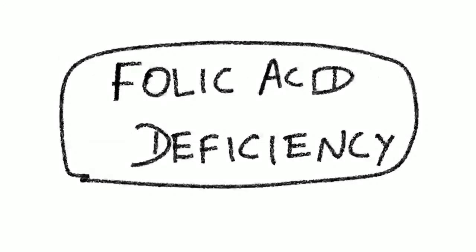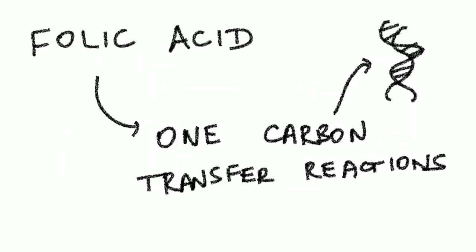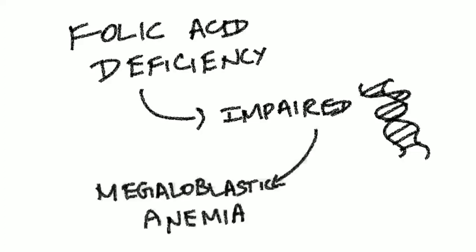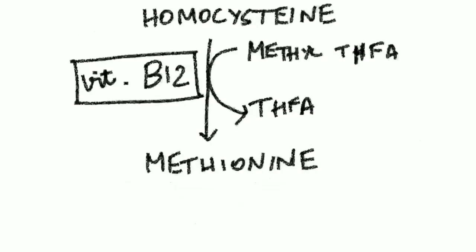Now we will see some points related to folic acid deficiency. Folic acid is helpful in various one-carbon transfer reactions in the body, which you have studied in biochemistry, and some of these one-carbon transfer reactions are helpful in DNA synthesis. So folic acid deficiency also causes impaired DNA synthesis, and this indirectly causes megaloblastic anemia. So you can see that folic acid is helpful in the one-carbon transfer reaction involved in the conversion of homocysteine to methionine, which is helping vitamin B12 in this process of conversion of homocysteine to methionine.